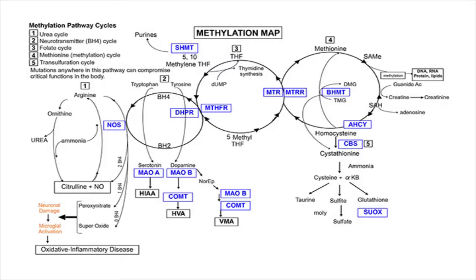Right under homocysteine is CBS. The CBS gene, when it has a particular mutation in it, forms a very active CBS enzyme that has the impact of grabbing homocysteine and sending it down pathway number five — the transsulfuration pathway. That pathway is an important detox pathway that uses the sulfur molecule in methionine in order to hopefully make glutathione, which is your body's main detox molecule and an important antioxidant and heavy metal remover.